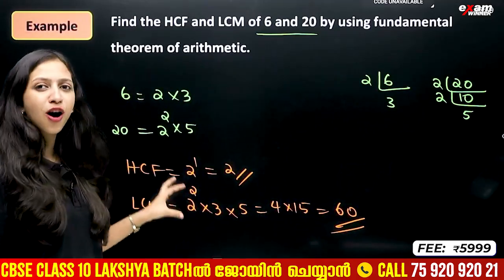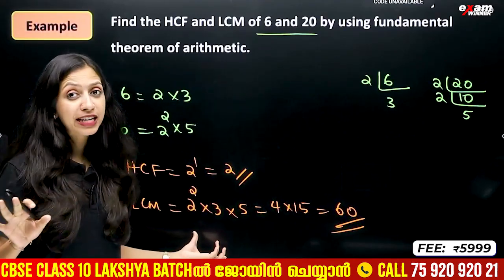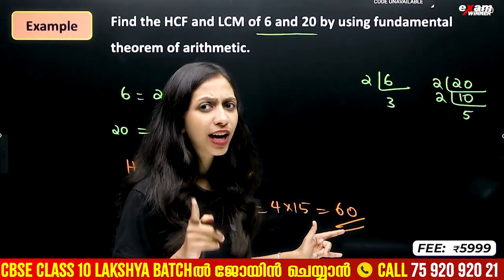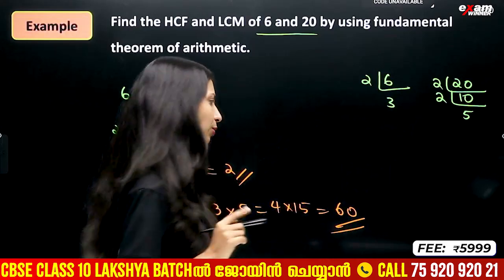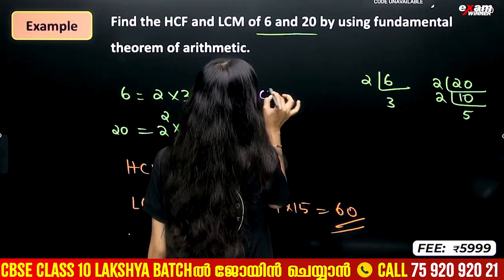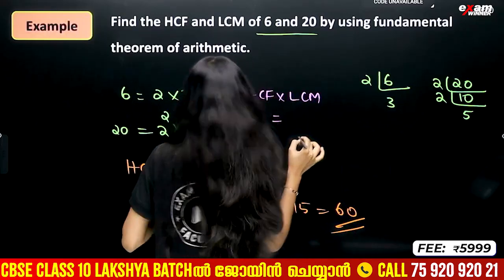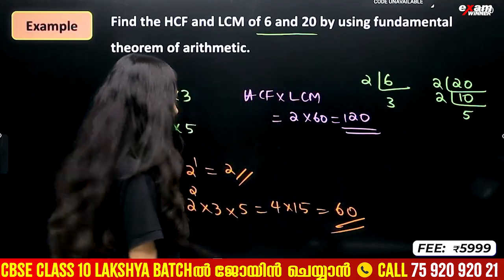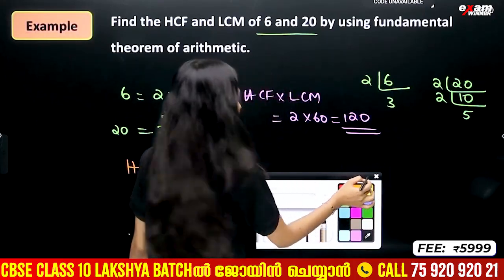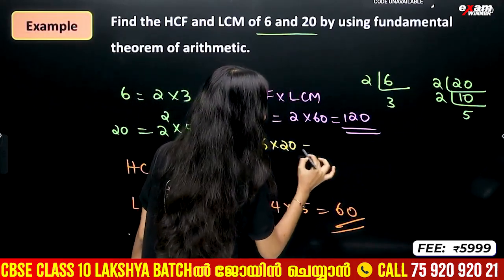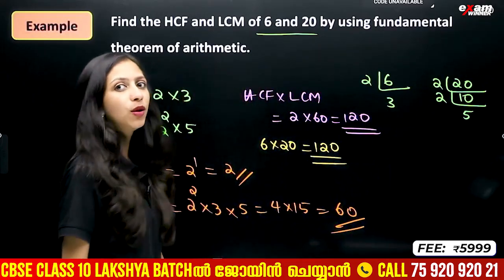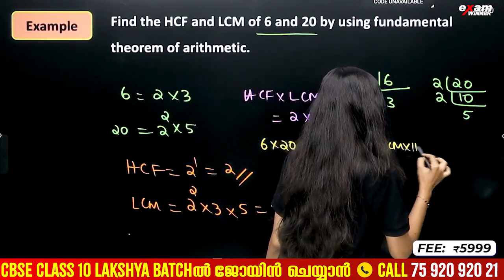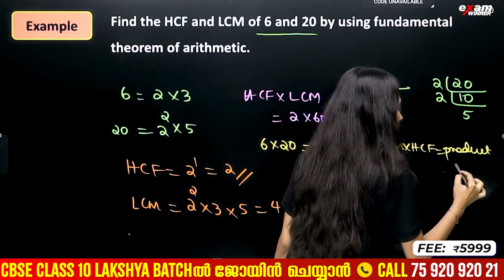HCF is the value with least power; LCM is the product of all factors at highest power. We need to check: HCF into LCM equals the product of the numbers. HCF into LCM is 2 into 60 equals 120.